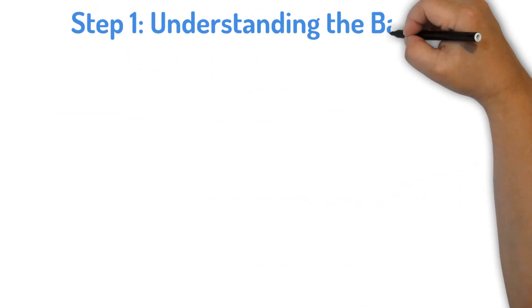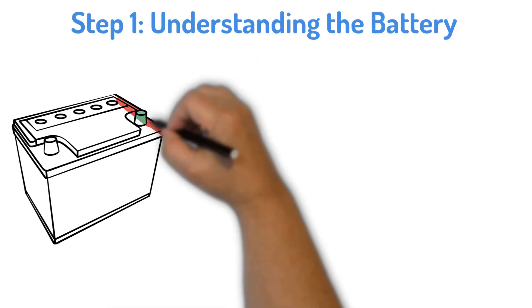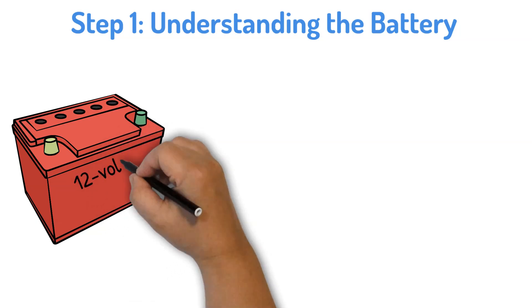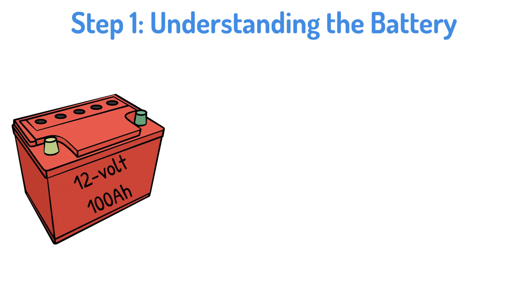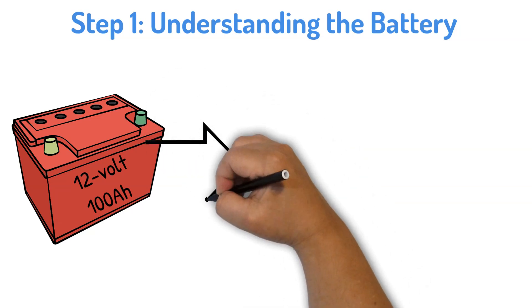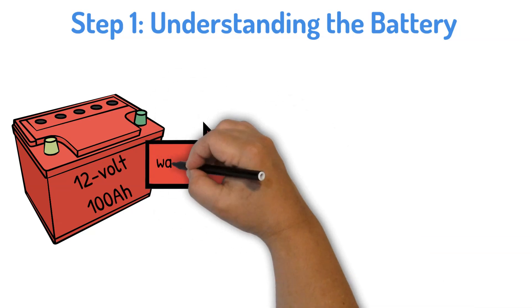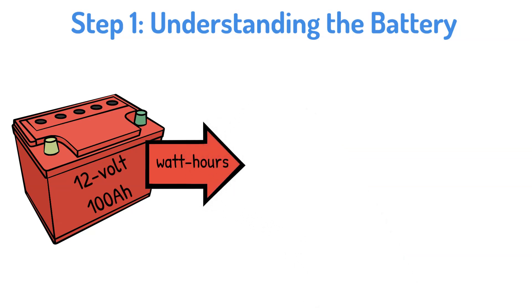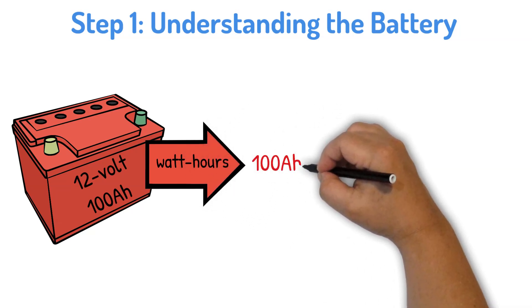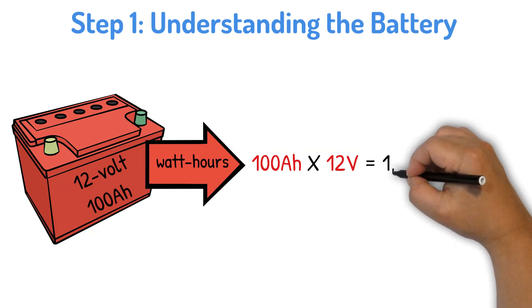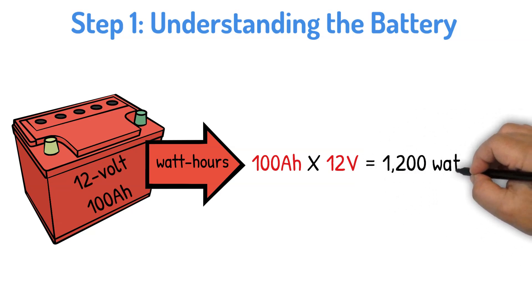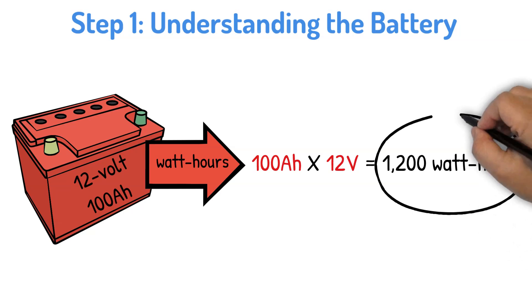Step one, understanding the battery. For today's calculations, we'll be using a 12-volt battery with a capacity of 100 amp hours, which is a fairly common choice for backup systems. To convert this into watt-hours, which gives us the total amount of energy the battery can store, we multiply the amp hours by the voltage. So this battery can theoretically supply 1,200 watt-hours of power.